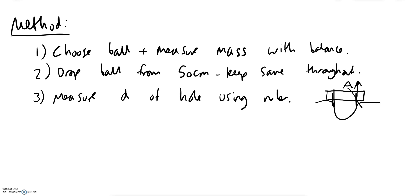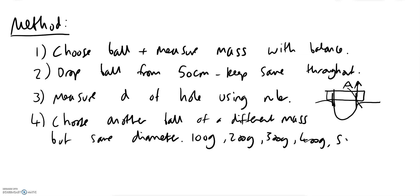Once you've done this, you now need to choose another ball of a different mass but same diameter. So you'd have to have some different balls of different masses but same diameter. You could even put in some value so you might do a 100 gram ball, 200 gram ball, 300 gram ball, 400 gram ball, 500 gram ball.